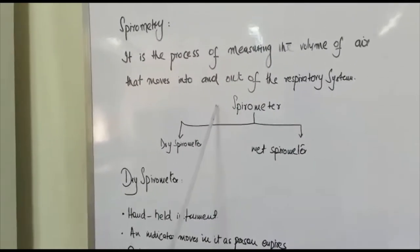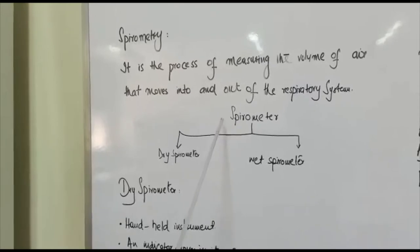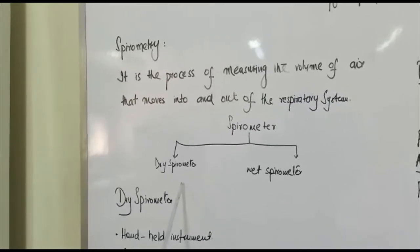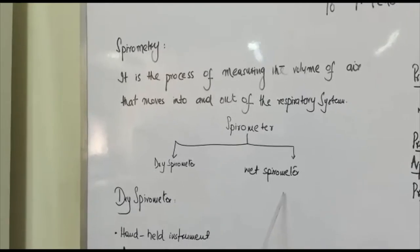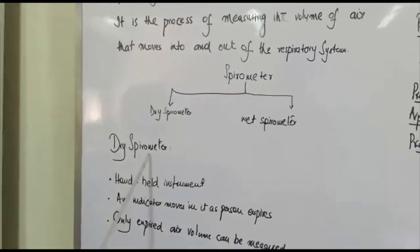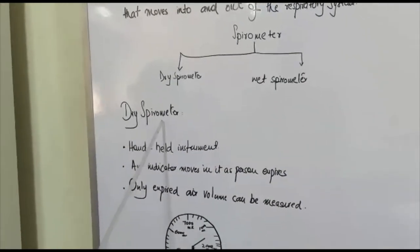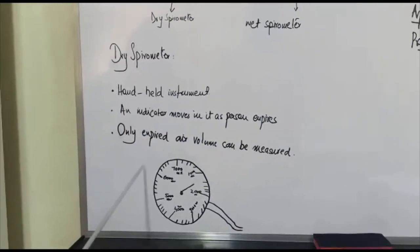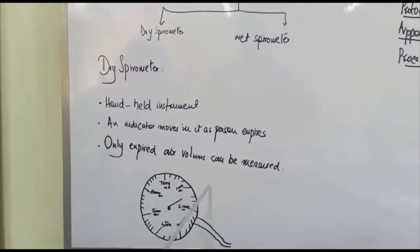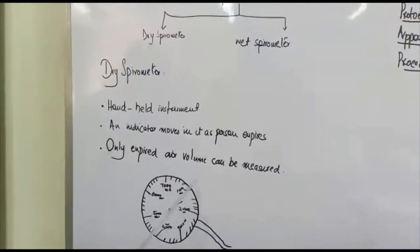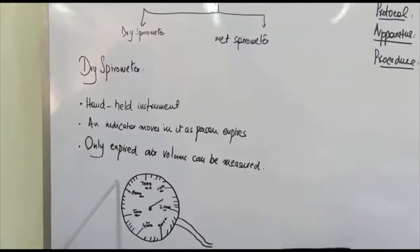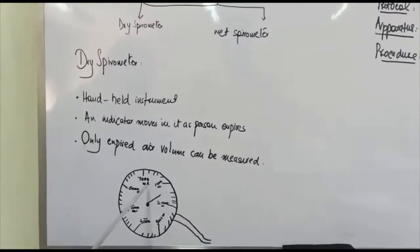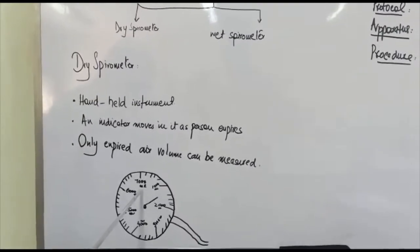The instrument used in spirometry is the spirometer. It is of two types: dry spirometer and wet spirometer. The dry spirometer is a hand-held instrument. This is the picture of the dry spirometer. It has an indicator and markings up to 7000 milliliters.